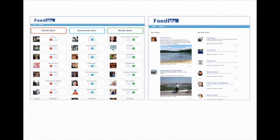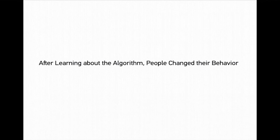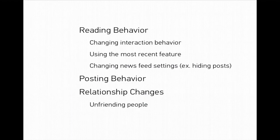Most people manipulated people from these different views — they moved family into the mostly seen category. It turns out in the content view, people didn't change very much at all. There were a few select people that changed a lot of things, but for the most part, people were quite content with the content that appeared on their news feed. We then sent follow-up questions to people to see how they behave on Facebook now. We found that 29 of the 40 people replied to our follow-up, and after learning about the algorithm, people changed their behavior. They changed their reading behavior, were more stingy with their likes, switched between top stories and most recent post features quite a bit more, started hiding posts, blocking things, being more careful about what they posted, and started unfriending people more.